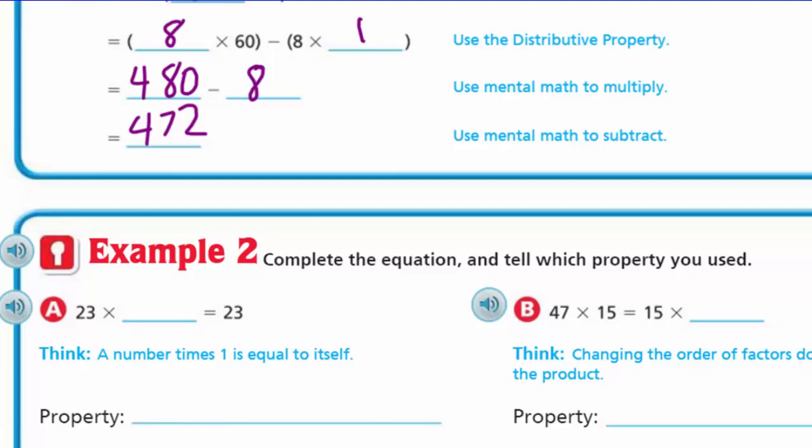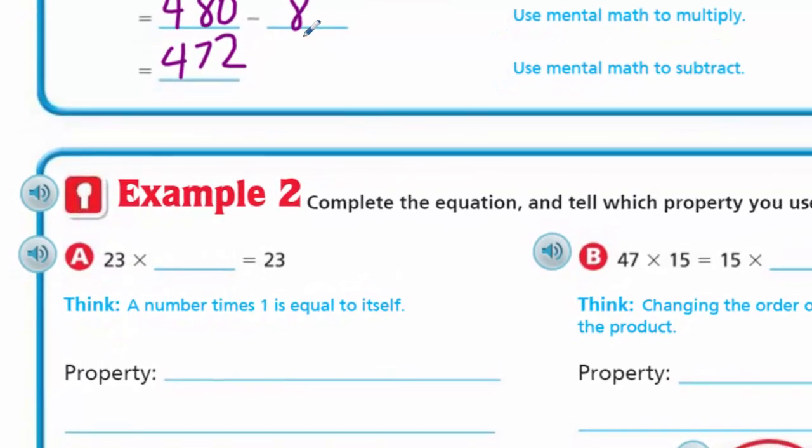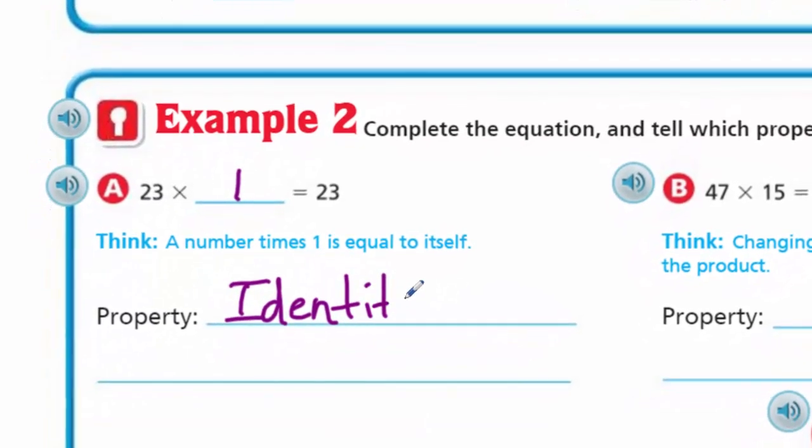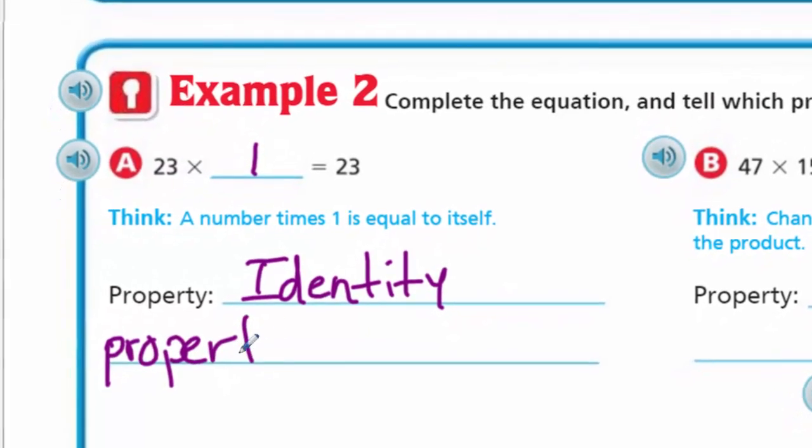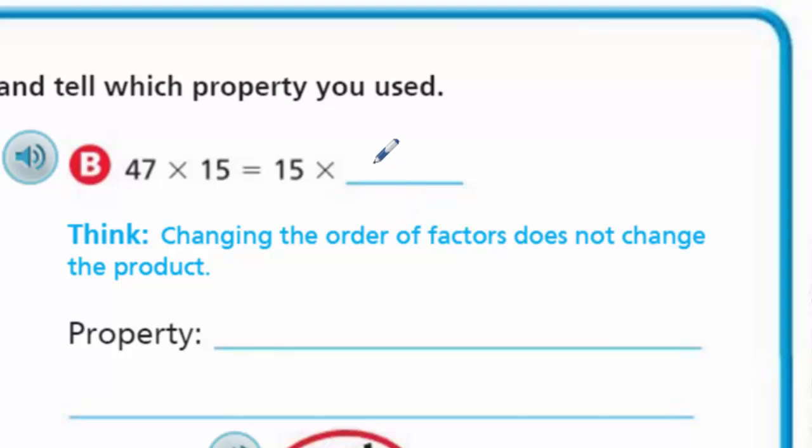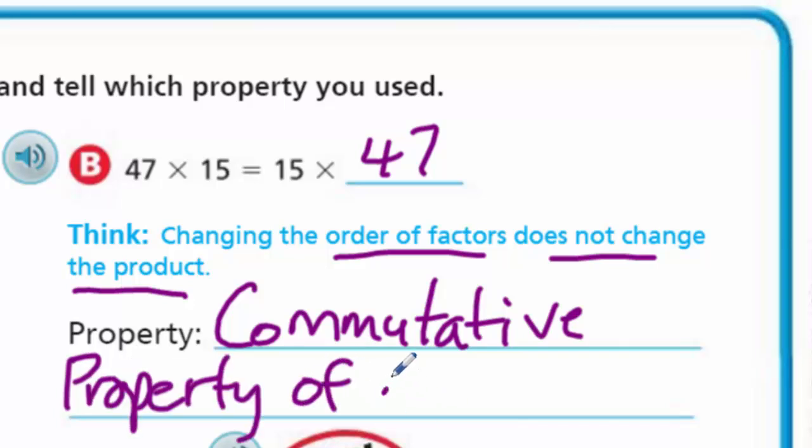Cool. Now let's look at example two. Complete the equation and tell which property you used. Okay, I have A. So I see 23 times something equals 23. I like that. Think, think. A number times 1 is equal to itself. Yeah. Pretty simple. They just kind of gave us the answer there. So this is the identity. Who am I? I am me. Identity property and this is of multiplication. Cool. All right. Now B says 47 times 15 is equal to 15 times 47. Yep. It's just the order change, right? The order of the factors does not change the product. And it couldn't make that any easier. And of course that is the commutative. Commutative. I always try to sneak an N in there. It just seems more natural to say commutative, but commutative property of, and we are multiplying, so it's going to be a multiplication again.